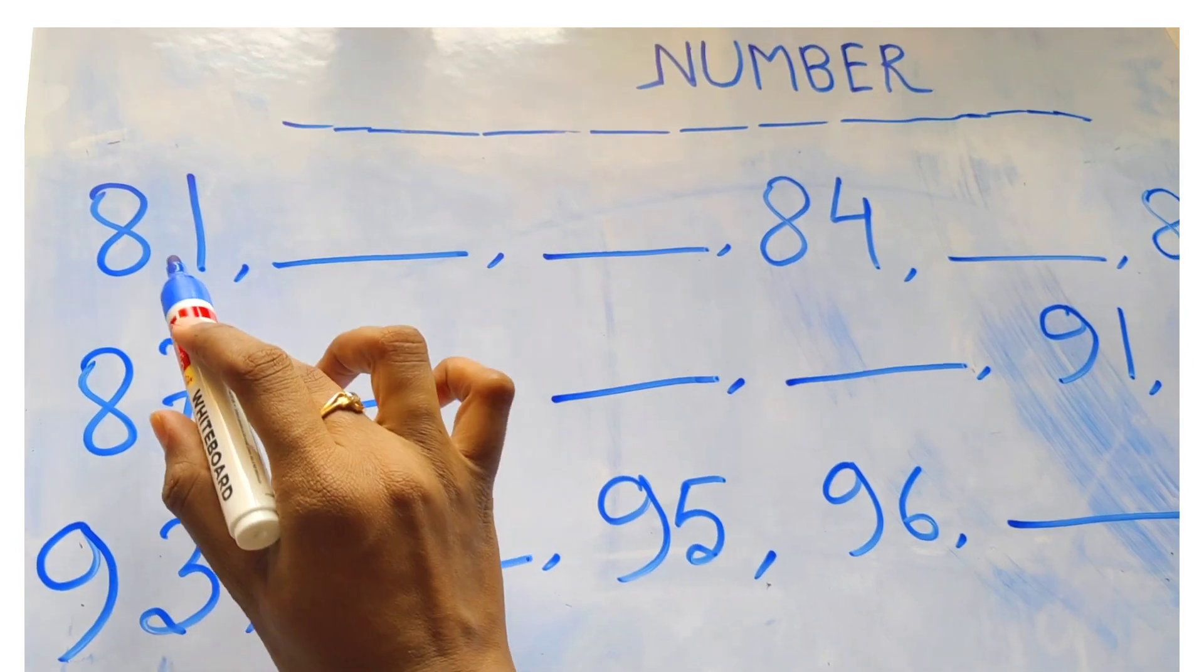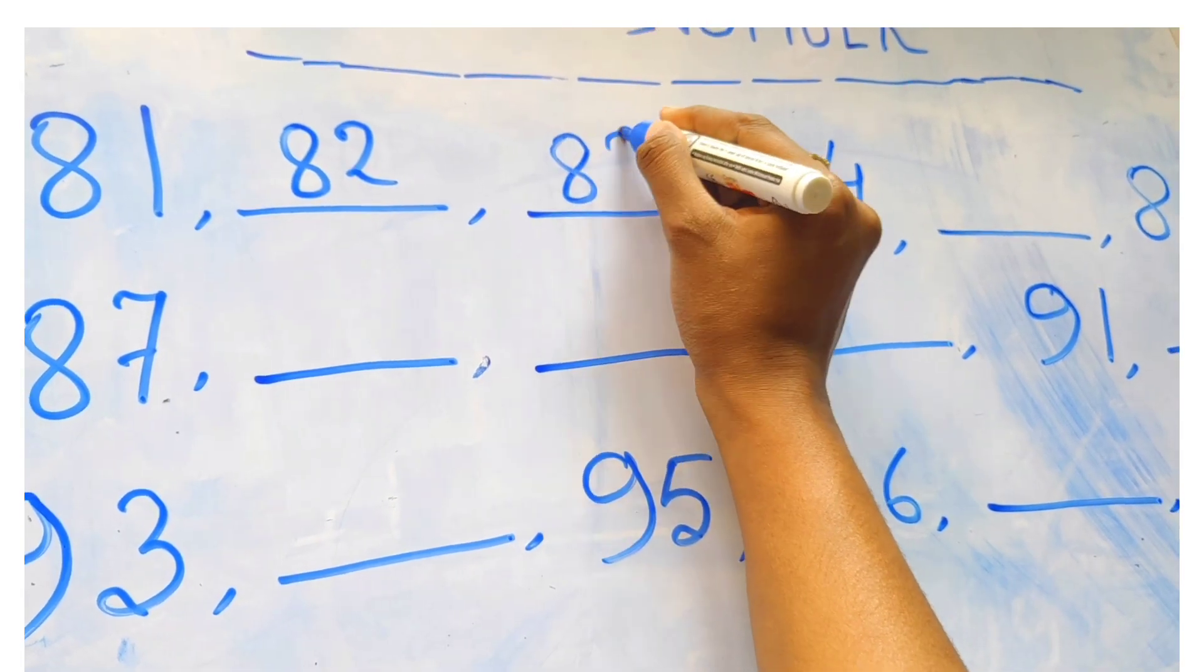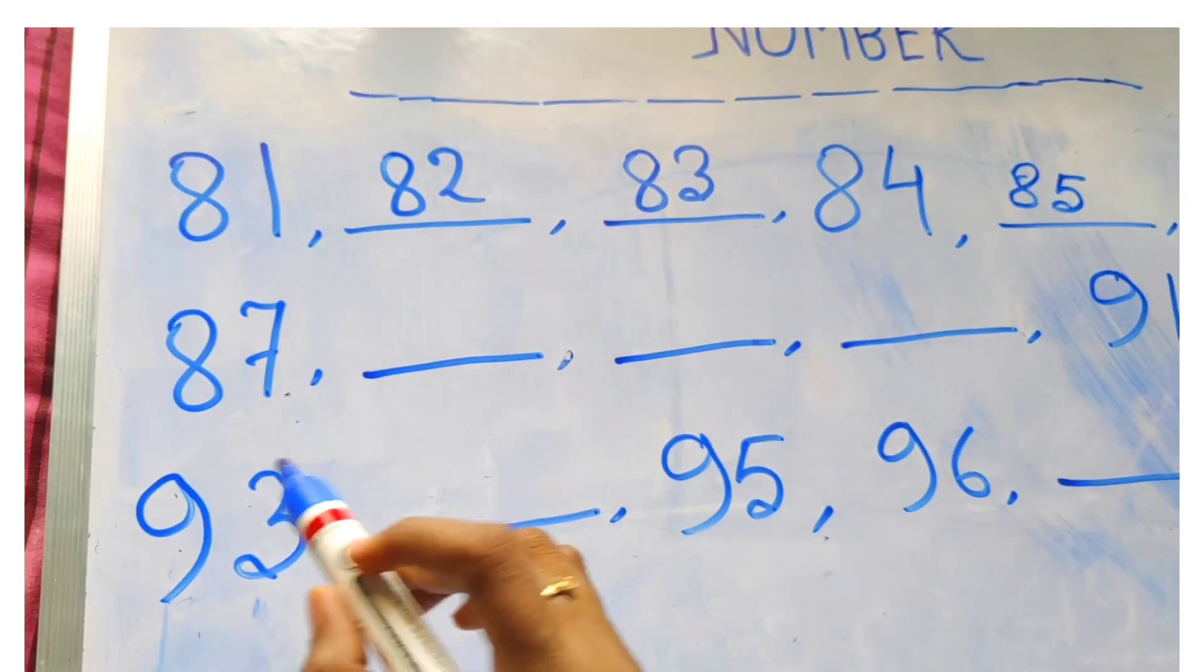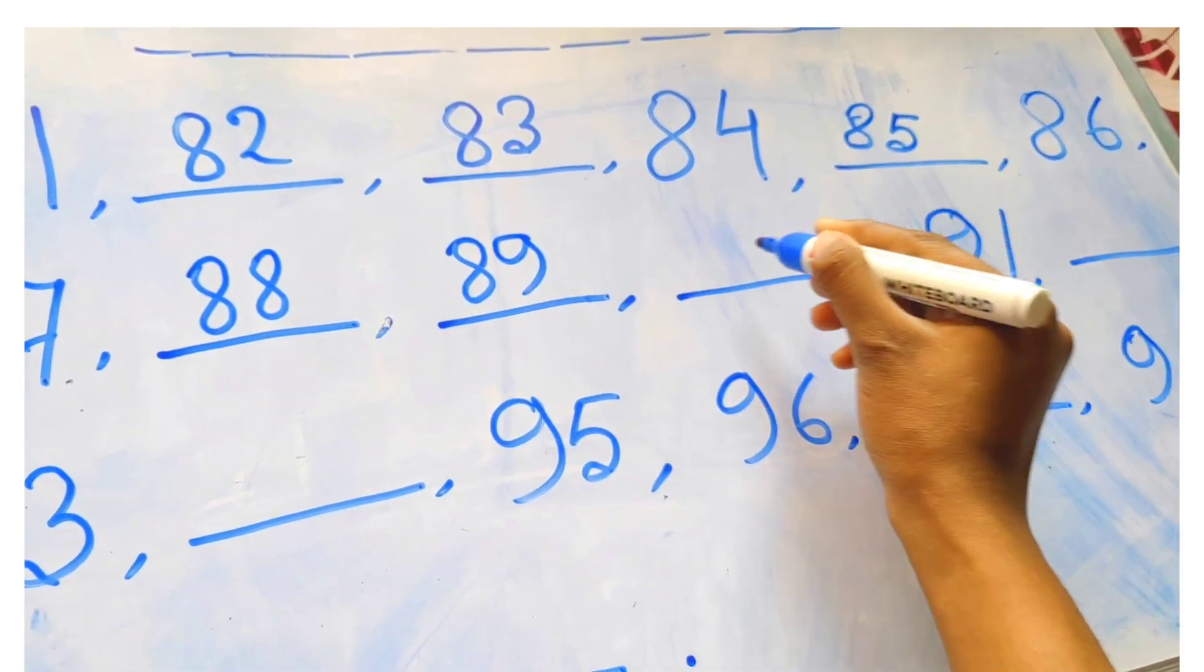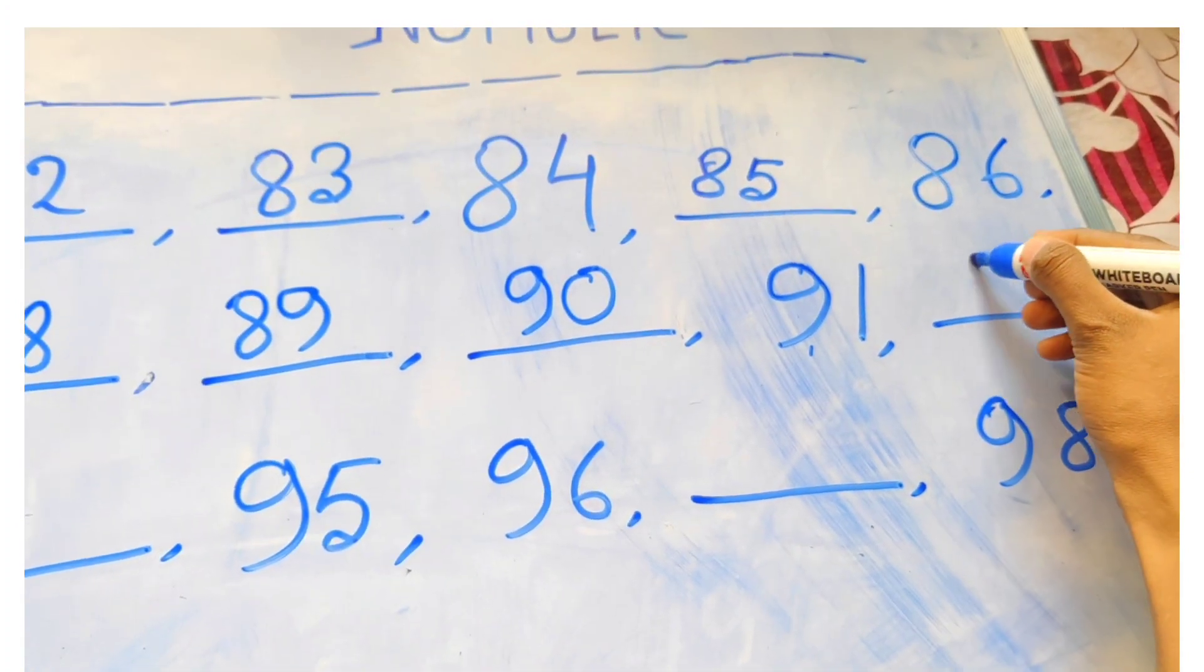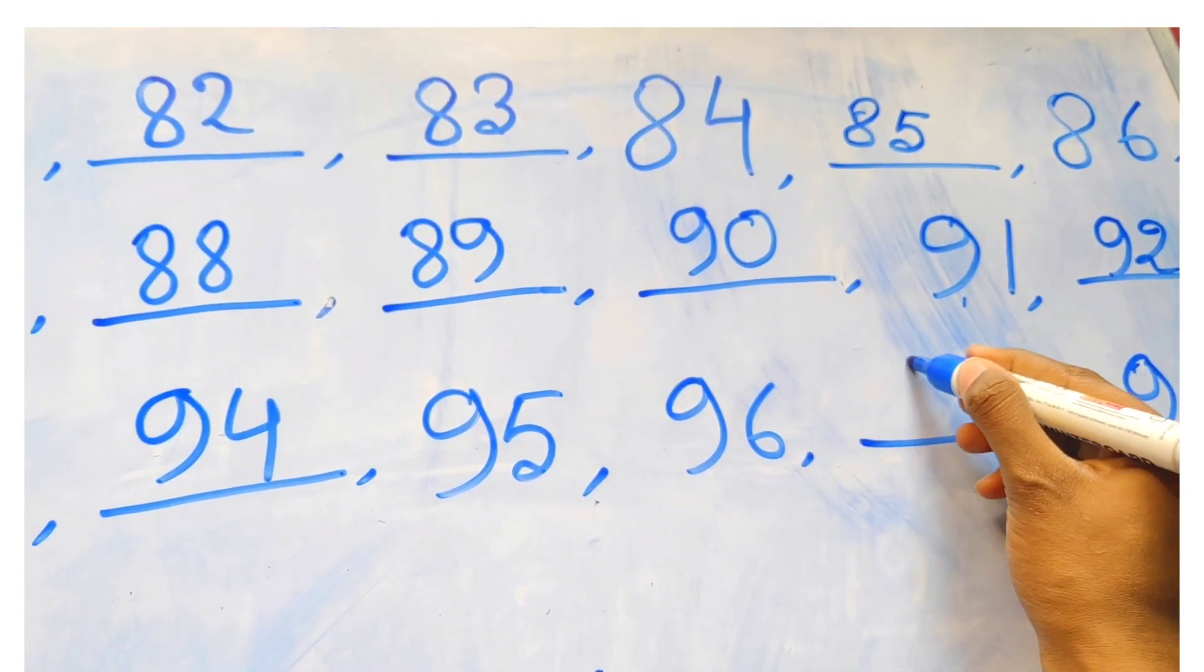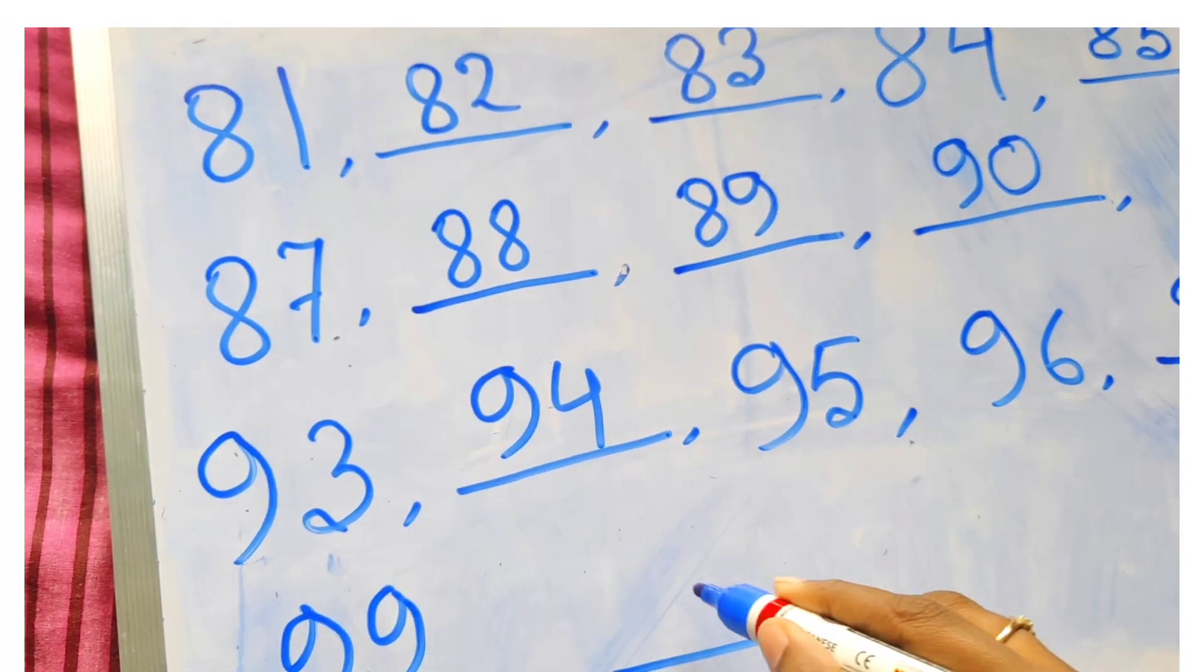Next, 81, 82, good. Then 83, 84, next 85, very good. Next, 86, 87, 88. Next, 89, next 90. Then 91, 92, 93, 94, 95, 96, 97, 98, 99, 100. Good.